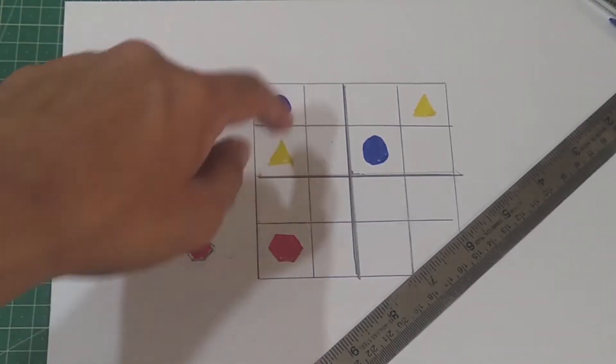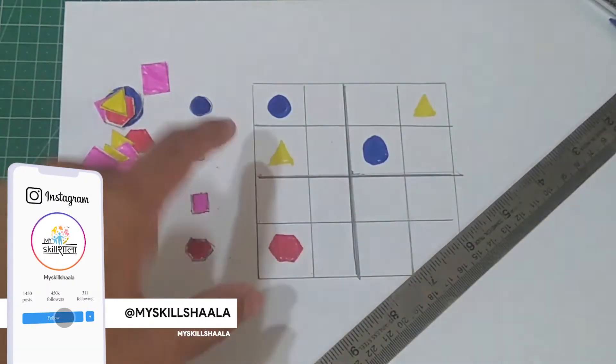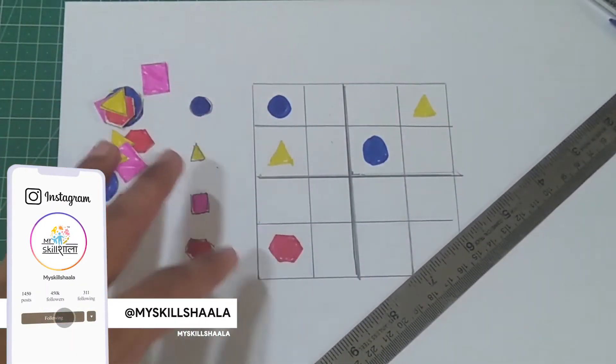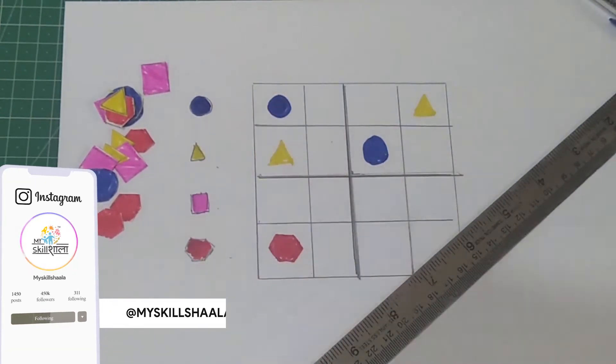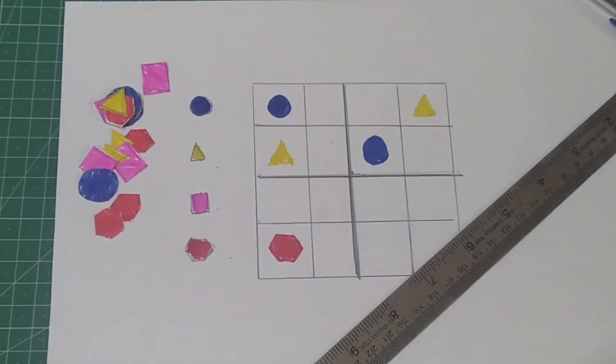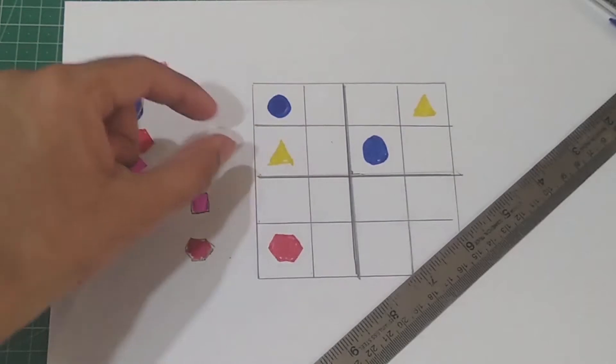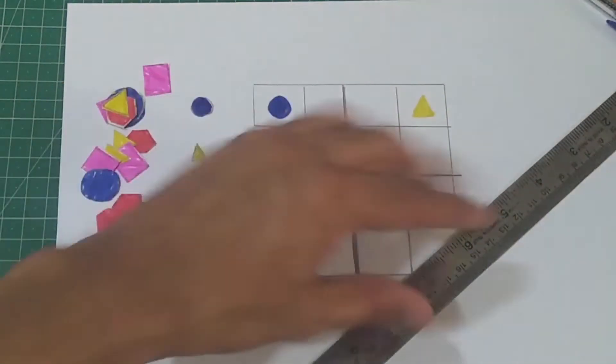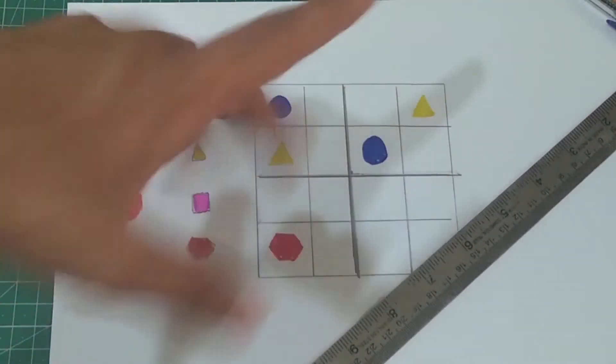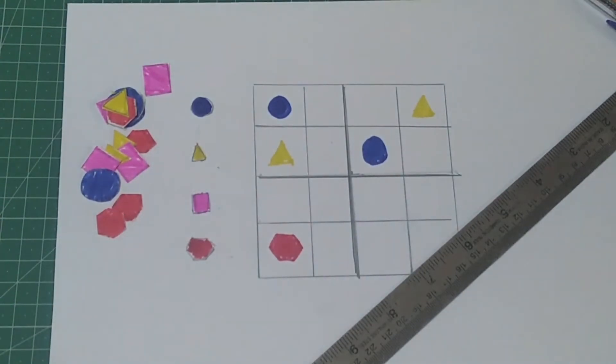So the question here, I have given some shapes here already, but now in the challenge what you have to do is create your own puzzle. You have to create your own Sudoku with some of the missing pieces and some shapes that you have already given.